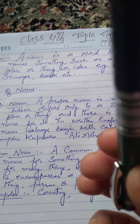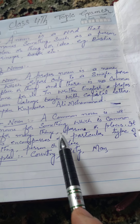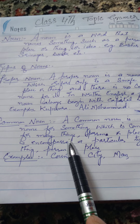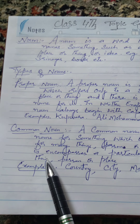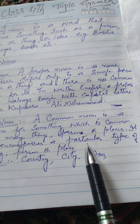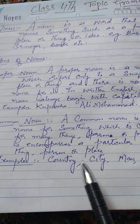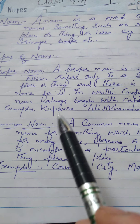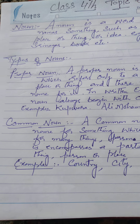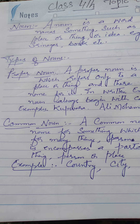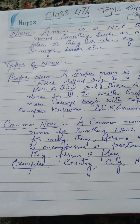A common noun is a name for something which is common to many things — persons or places. It encompasses a particular type of thing, person, or place. Examples include: country, city, man, woman. So a common noun refers to various things in general — for example, 'book' refers to any book, making it a common noun.